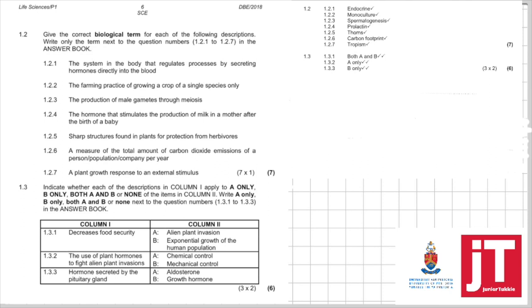1.2.1. The system in the body that regulates processes by secreting hormones directly into the blood. So a system that secretes hormones directly into the blood, that's the key word. And that you should know as endocrine system. 1.2.2. The farming practice of growing a crop of single species only. Now, in 2018, human impact was also included in the exam for the matrics. So it has been taken out of the exam for the matrics, but the grade 11s can still watch this video and learn as well. And growing a crop of a single species only, that is obviously monoculture.